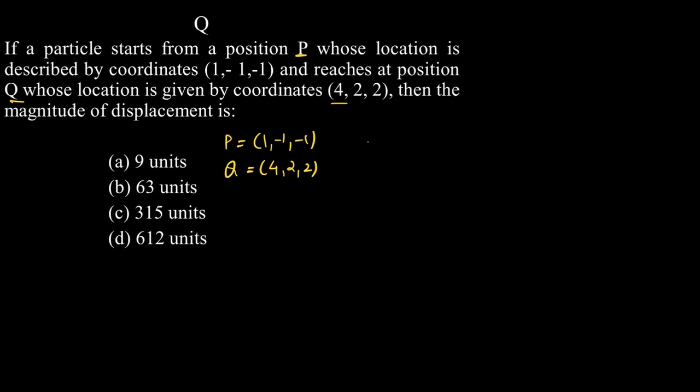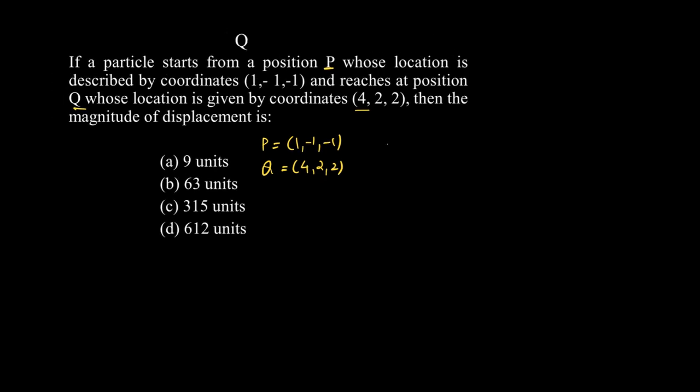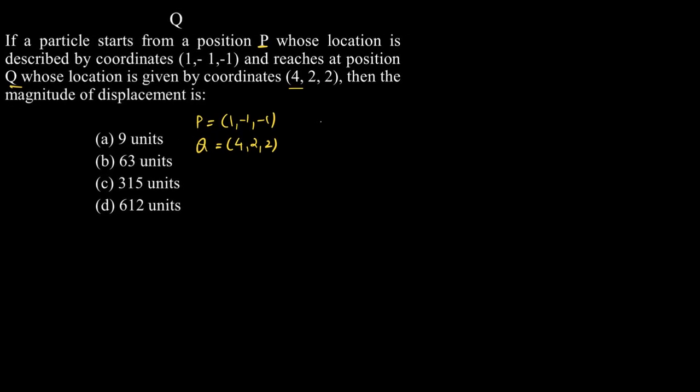Now, in which case we can say that vector P is basically 1i - 1j - 1k and vector Q is equal to 4i + 2j + 2k.